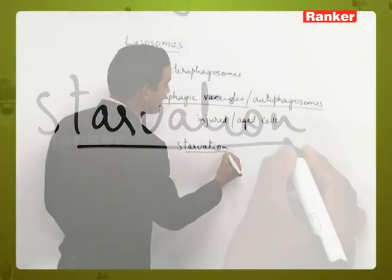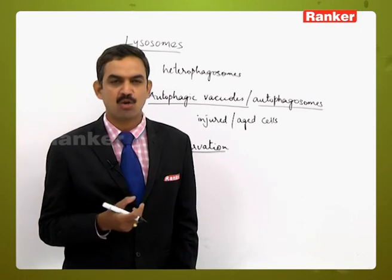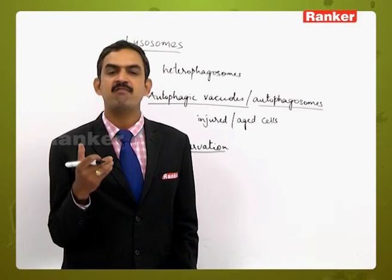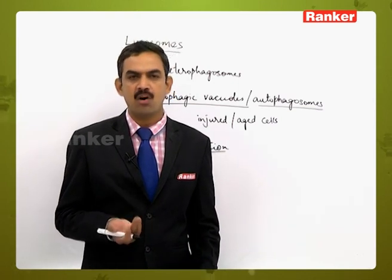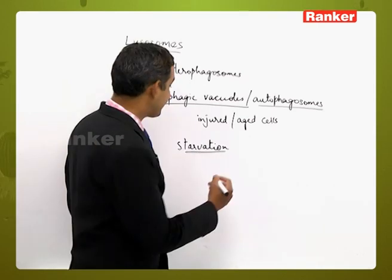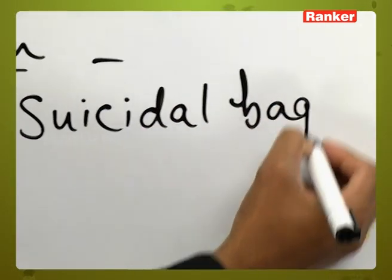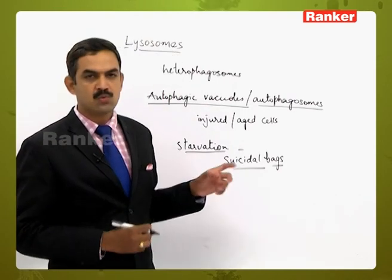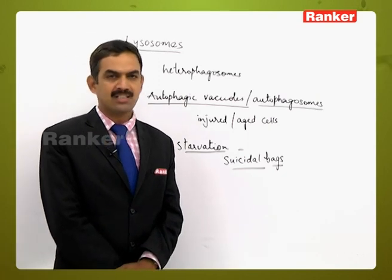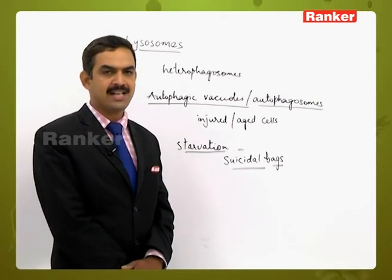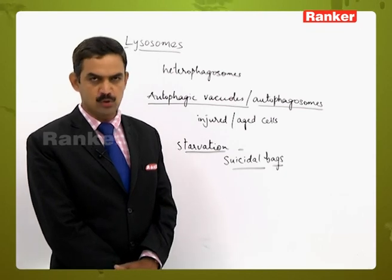Another condition involves starvation — when a cell does not get the required amount of food, it starts eating its own cytoplasmic contents. The eating of cytoplasmic contents leads to the destruction of cell functions, gradually leading to the killing of the cell. This is the reason why lysosomes are called 'suicidal bags,' as they can lead to the death of the cell itself. This autophagic process is considered another form exhibited by lysosomes, in addition to primary, secondary, and tertiary lysosomes.